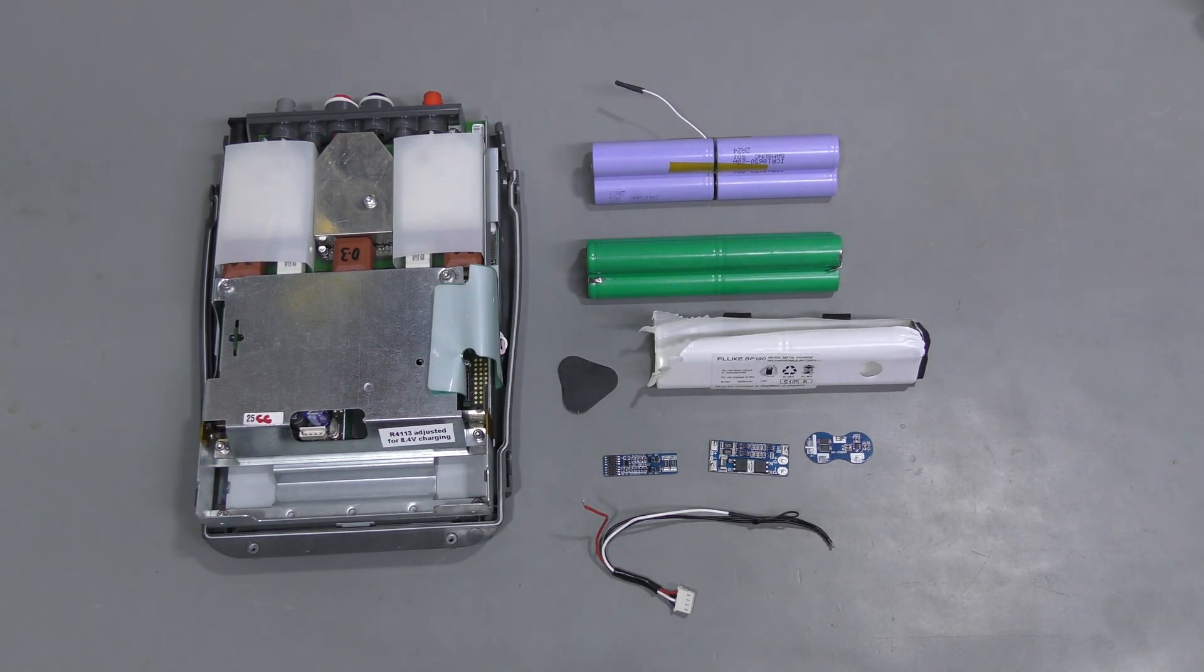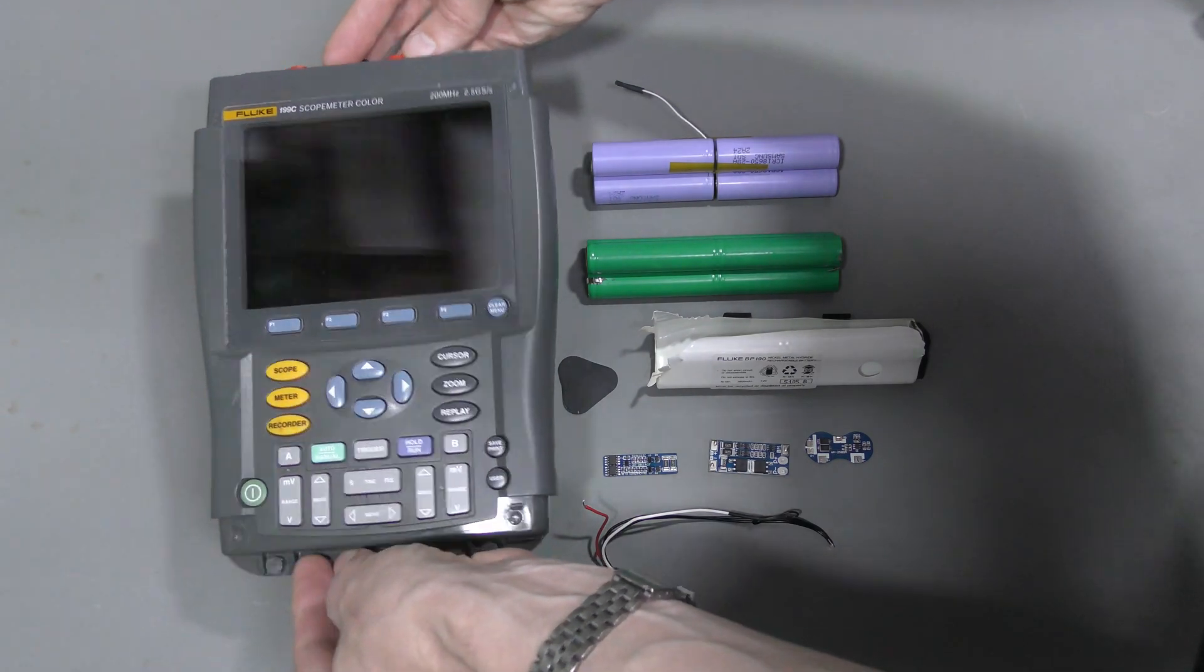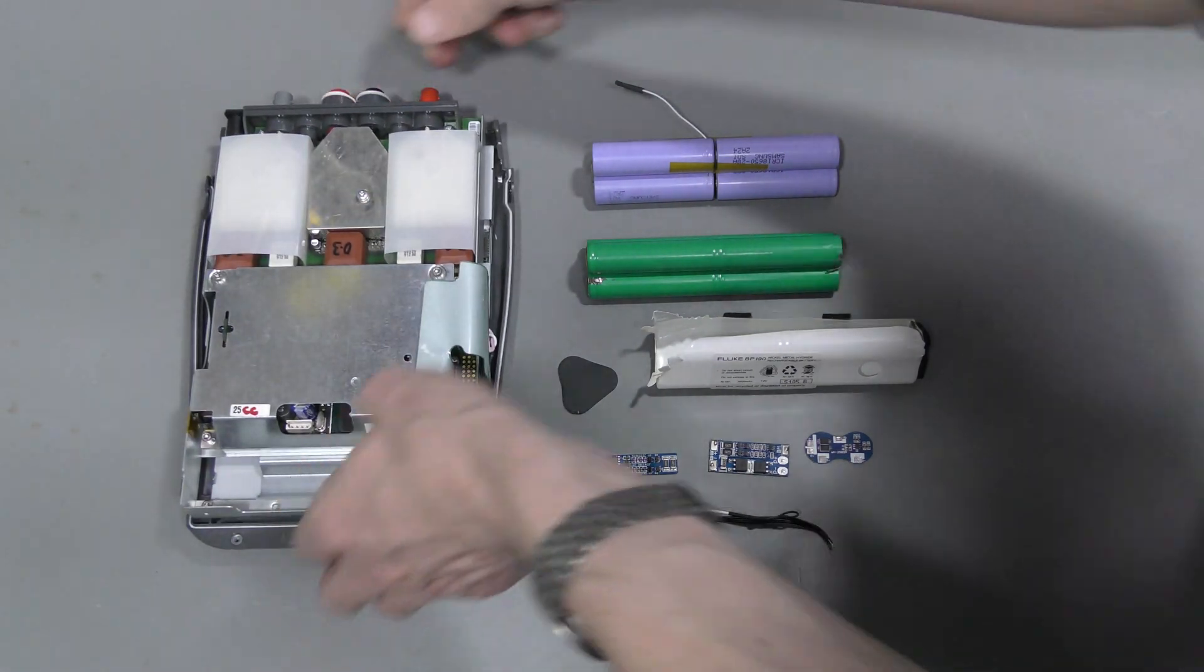Hi everyone! Welcome to the lab! This episode is about a lithium-ion battery for this Fluke scope meter which is 199C, and I think I have a better solution compared to my previous video on this.